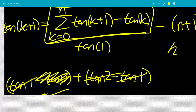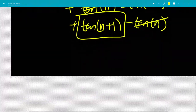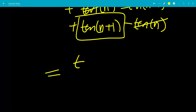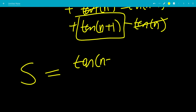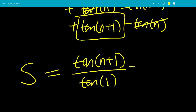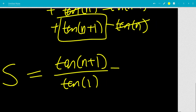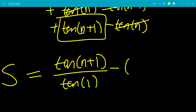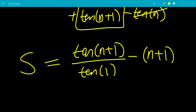So our final answer is: the sum equals tangent of n plus 1, divided by tangent of 1, minus n plus 1.